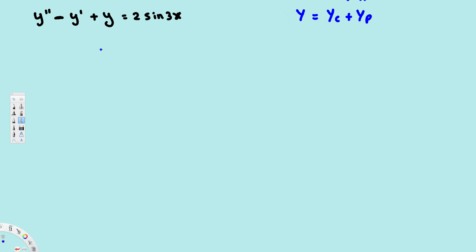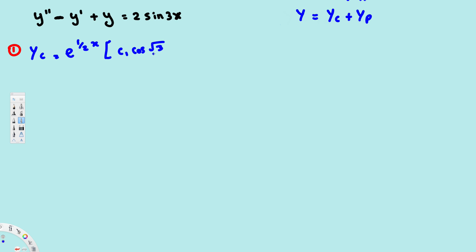When you get complex roots, the complementary solution follows a specific pattern. The complementary solution yc is equal to e to the power of (1/2)x times c1 cos(√3/2 · x) plus c2 sin(√3/2 · x). This is our complementary solution.